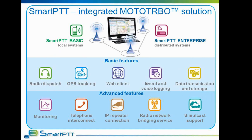SmartPTT comes in two variants. SmartPTT Basic is a solution for small local radio networks where a control station is used to dispatch the system. SmartPTT Enterprise allows dispatch and control over complex Motorola MotoTurbo networks such as IP-Site Connect, Capacity Plus, Linked Capacity Plus, Connect Plus, and so on.